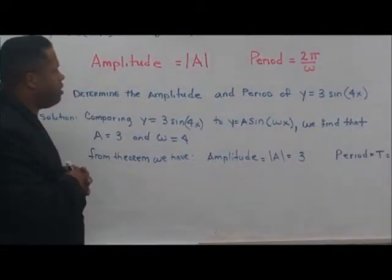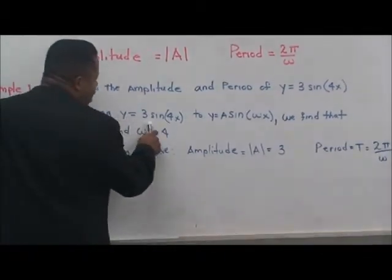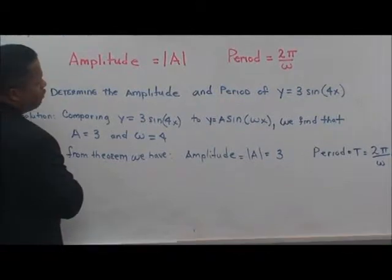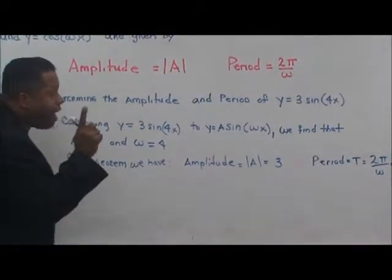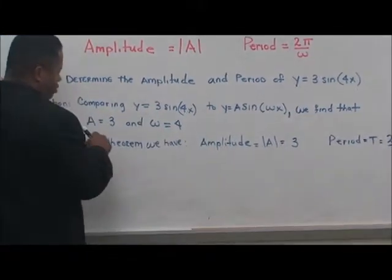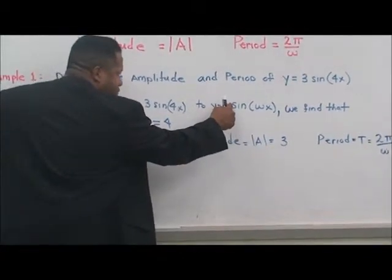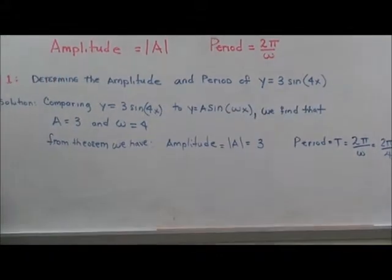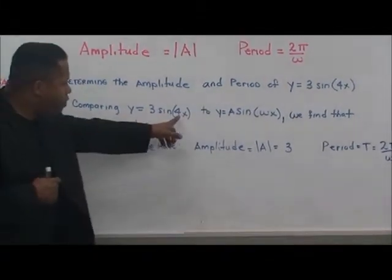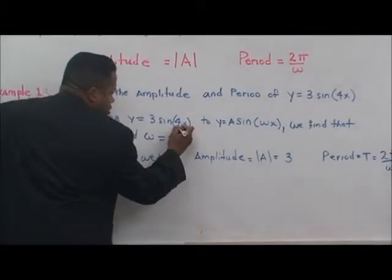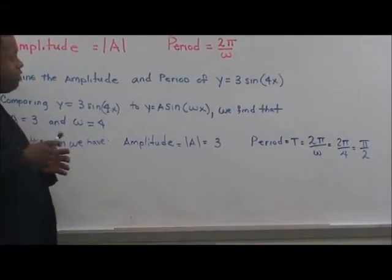We want to determine the amplitude and period of y equals 3 times sine of 4x. We compare y equals 3 times sine of 4x to y equals A times sine of omega x. We find that A is equal to 3, because the constant in front of the trig function is considered the amplitude. And omega is equal to 4, because it's represented by that value in that position. From the theorem, the amplitude is equal to the absolute value of 3, which is 3.